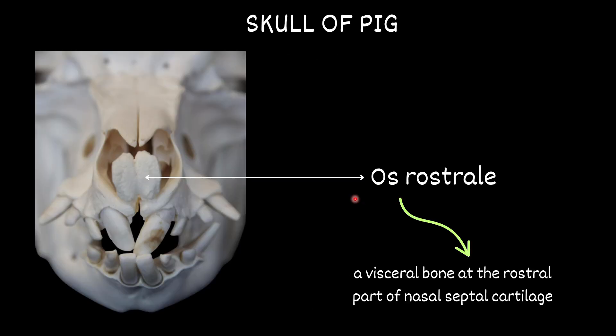Very importantly, in the pig skull you will find the os rostrale — a visceral bone at the rostral part of the nasal septal cartilage.